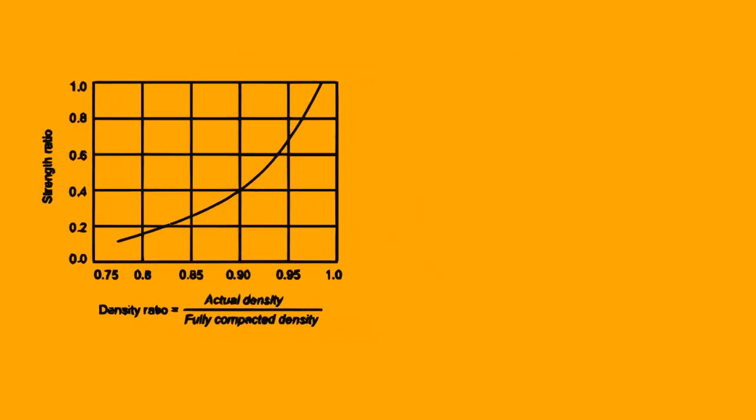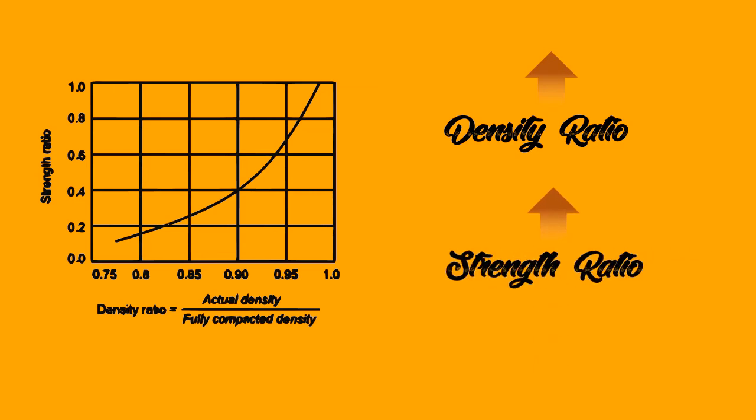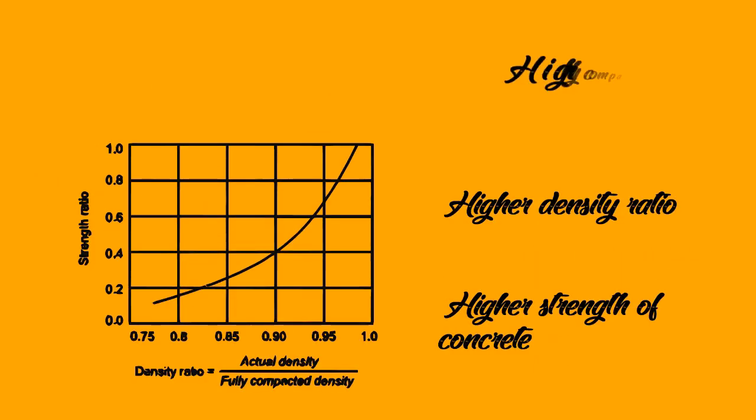The higher the density ratio, the higher would be the concrete strength ratio. Highly compacted concrete yields higher density ratio, which in turn results in higher strength of concrete.